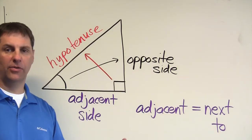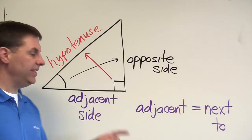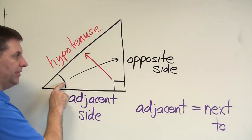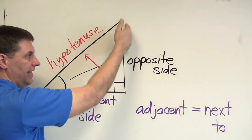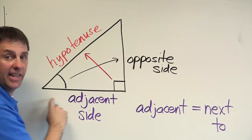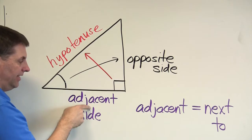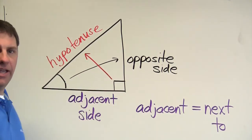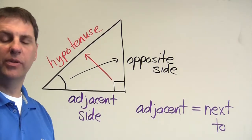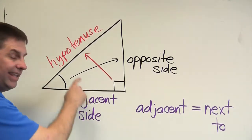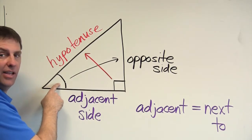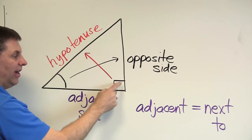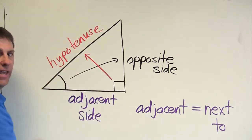All three sides are based on your point of reference. The opposite side is directly across — draw an arrow straight across. Adjacent is next to the angle. The hypotenuse is always the hypotenuse. A common mistake is confusing the hypotenuse with the adjacent side. Yes, the hypotenuse is next to this angle, but it's the hypotenuse first. Never label the side across from the 90-degree angle as adjacent.